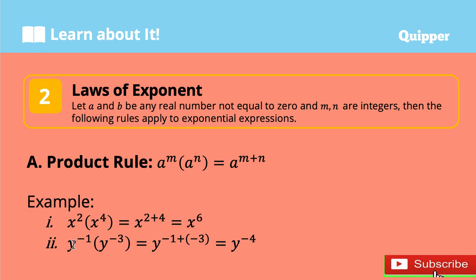Another example: y to the power of negative 1 times y to the power of negative 3. Just copy the same base, which is y, then add the exponents: negative 1 plus negative 3, and that equals y to the power of negative 4. This is not yet the final answer because the exponent is negative — we still have to simplify this, but I will discuss that later.